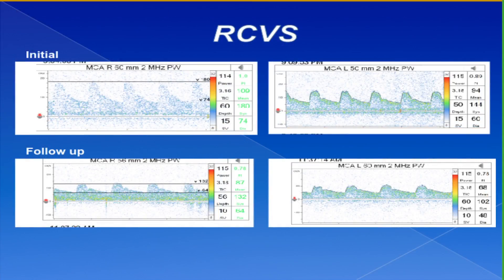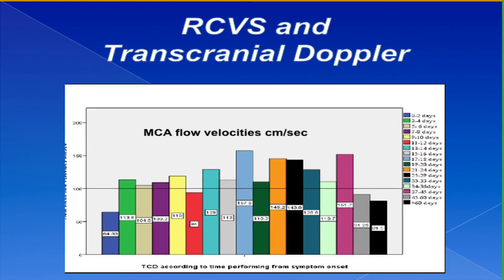We treated her with verapamil and also performed quite a bit of transcranial dopplers. We were able to study this patient with transcranial doppler — systolic flow velocity was above 200 — and just a few days later the flow velocities started to drop. We've studied a number of patients with transcranial doppler who had reversible vasoconstrictive syndrome and see an interesting crescendo-decrescendo pattern of flow velocities. This is how we like to follow these patients — it gives a way of tracking improvement and provides feedback for the patient.